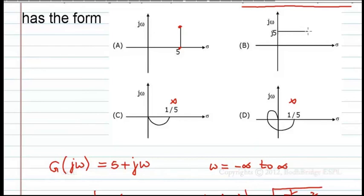Here, whatever be omega, the magnitude comes out to be something like this. This is not angle, here it is 90 degrees, but here it is not 0 degrees. Here we have both things satisfied. At omega equal to 0, we have 5. And omega equal to infinity, we have infinity and the angle is also 90 degrees. So option A is the correct answer.